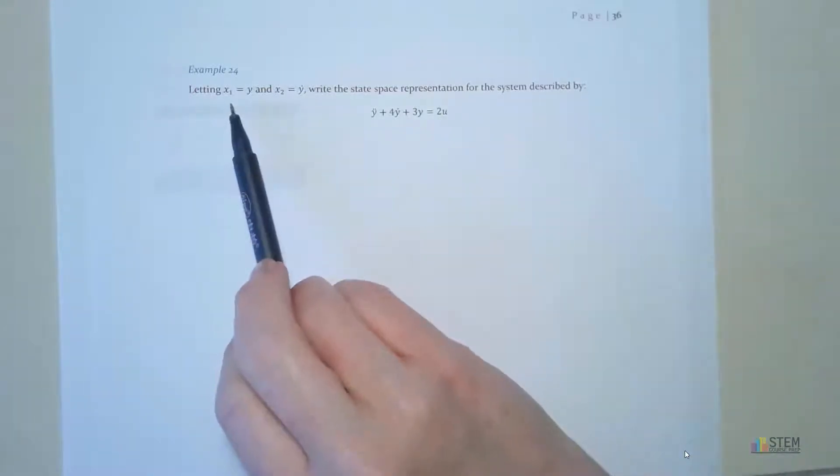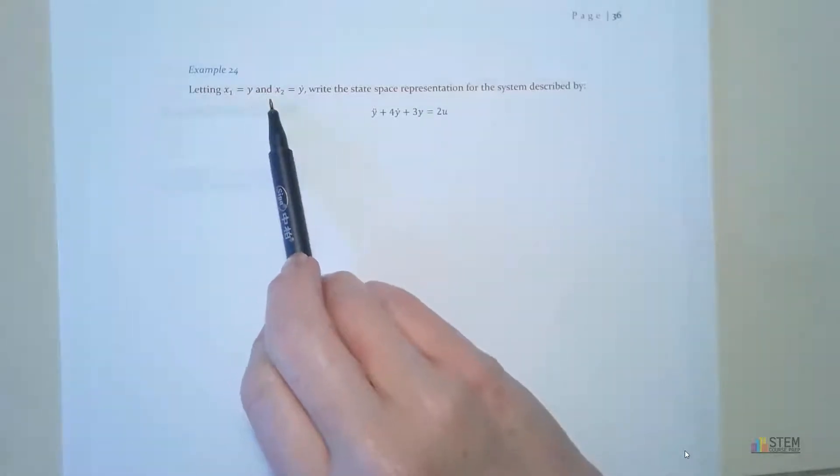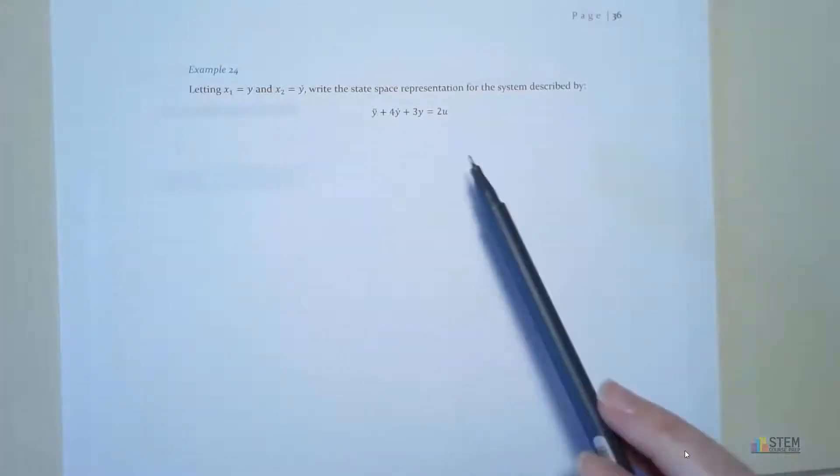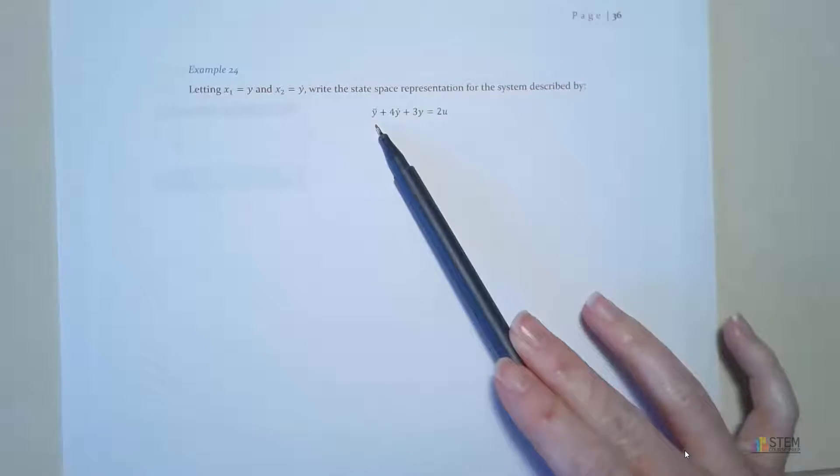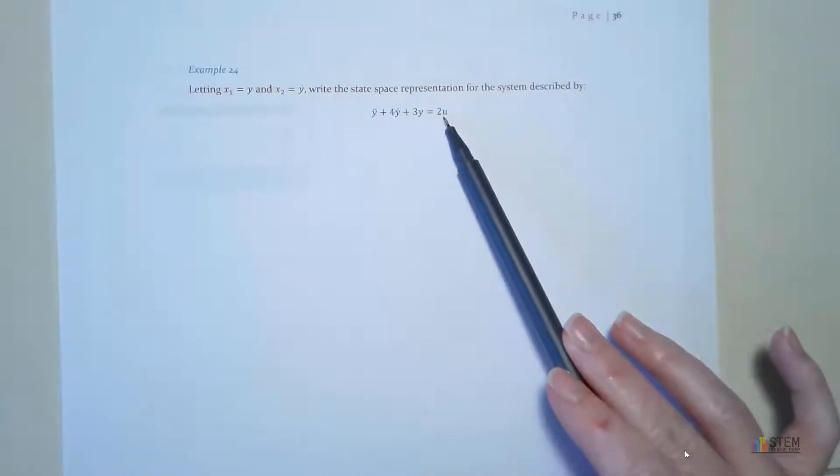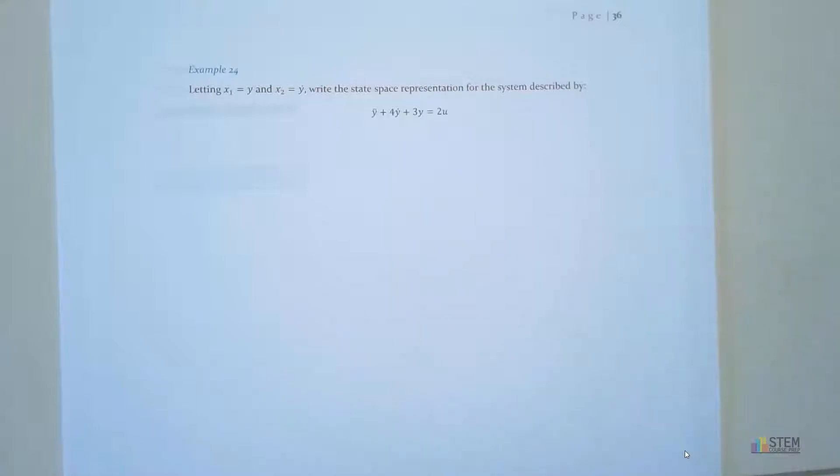In our problem statement, it says we're going to let x1 equal y and x2 is going to be y dot. We're going to write the state space representation for the system described by this second order differential equation. If it helps you visualize it, think about y double dot as being an acceleration, so then y dot would be velocity, y would be displacement, and u is going to be like the input force.